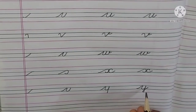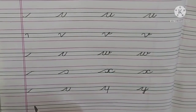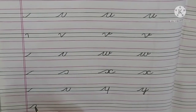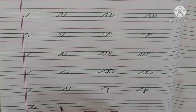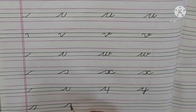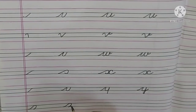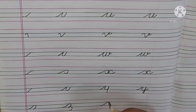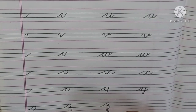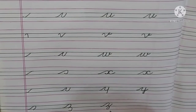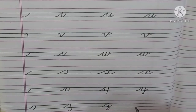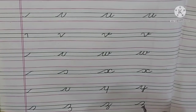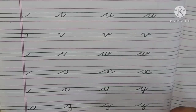After Y, what comes? Z. For Z, where do we start? From the third line to the second line. Make a curve like this. Once again — from the third line make a curve to the second line, then bring it back, then make one more curve like this. Once again — third line to second line, make a curve, round it once more, then draw a straight line slightly upward from the third line. This is your letter Z.